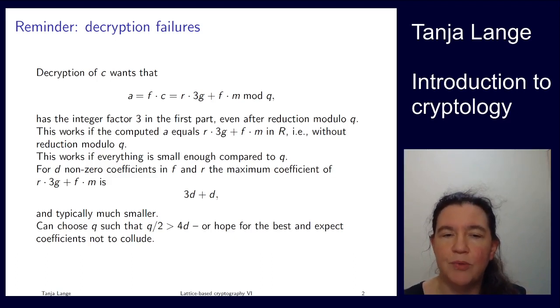Now decryption works, so we're getting the correct value there if and only if we're choosing the number of non-zero coefficients f and r to be small enough. g actually doesn't matter so much. Well, you can have g arbitrary and m is a message, you don't want to restrict what you can send so m has to be permitting to have high weight as well.